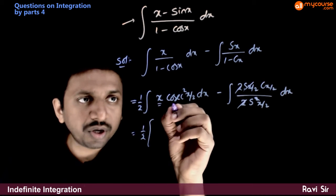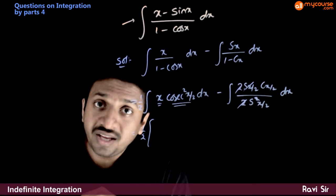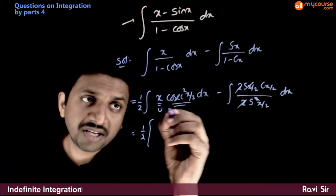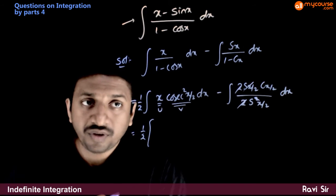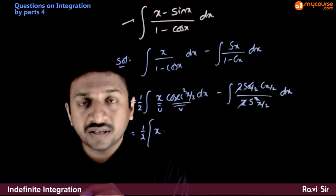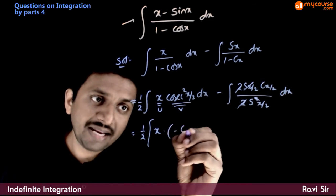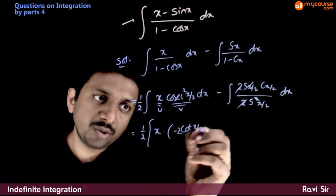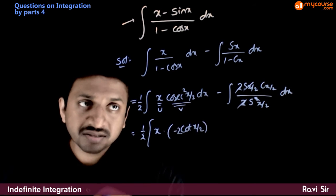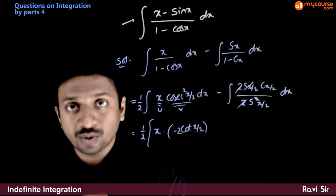Here you have a product of two functions, so how do we integrate this? I will take my first function as u and the next function as v. So u times integral v: the integration of cosec²(x/2) is minus cot(x/2) times 2, because cosec²(x)'s integration is minus cot x, so cosec²(x/2)'s integration is minus cot(x/2) into 2.